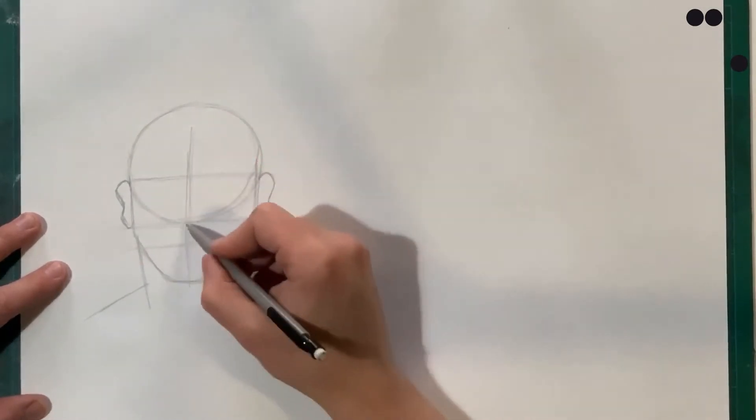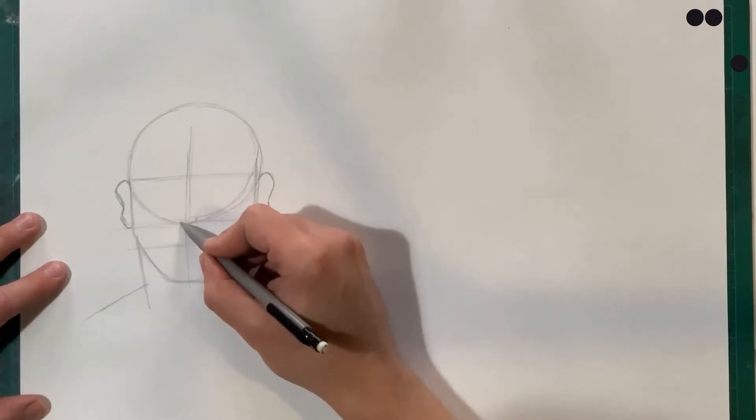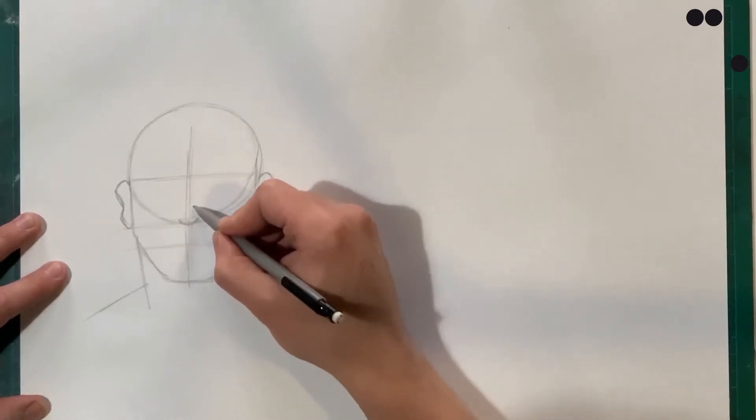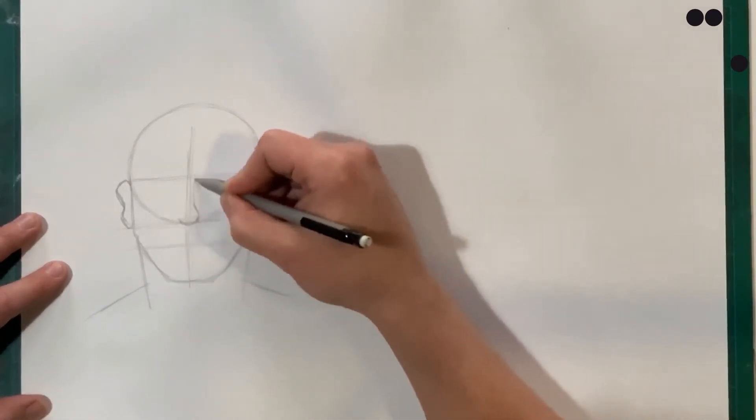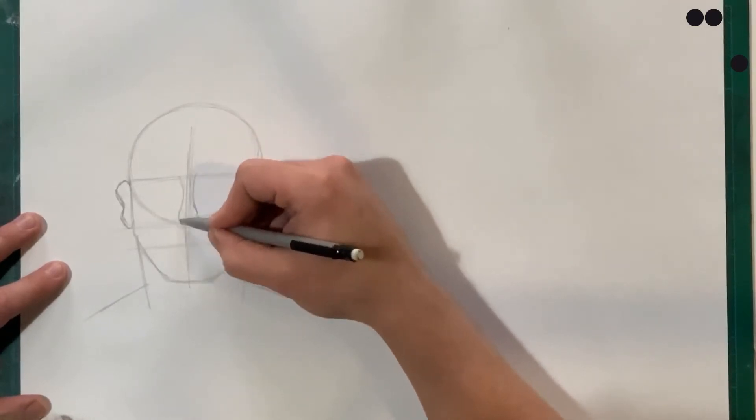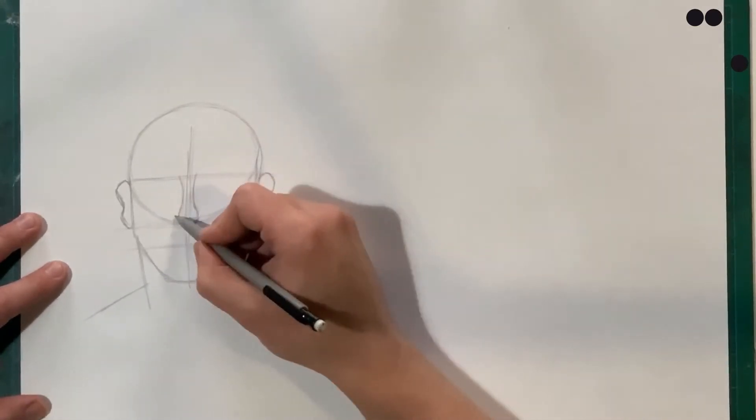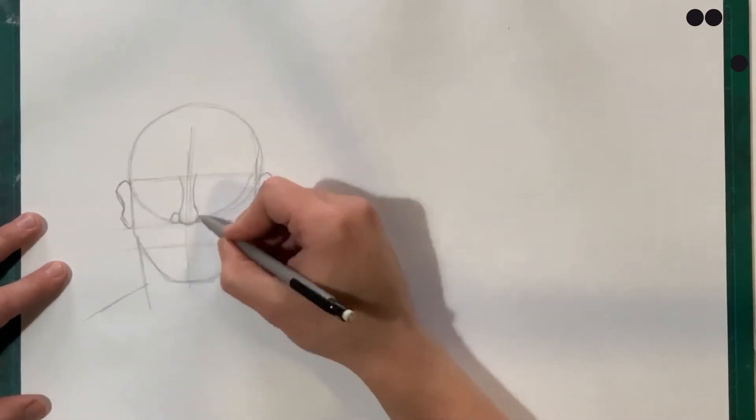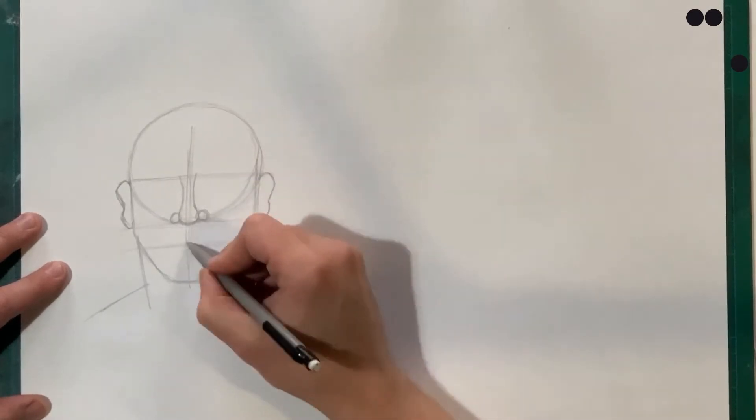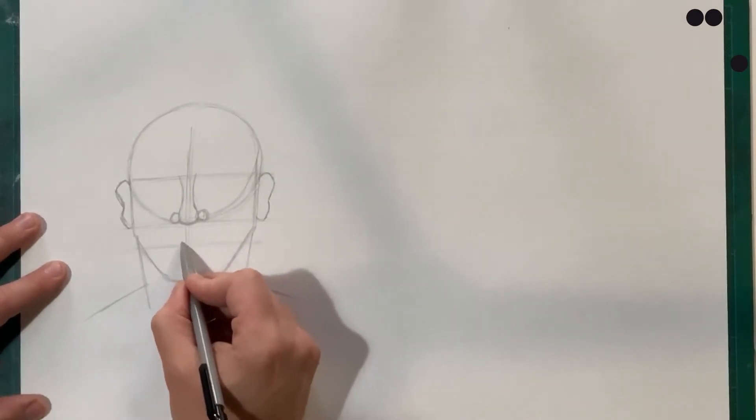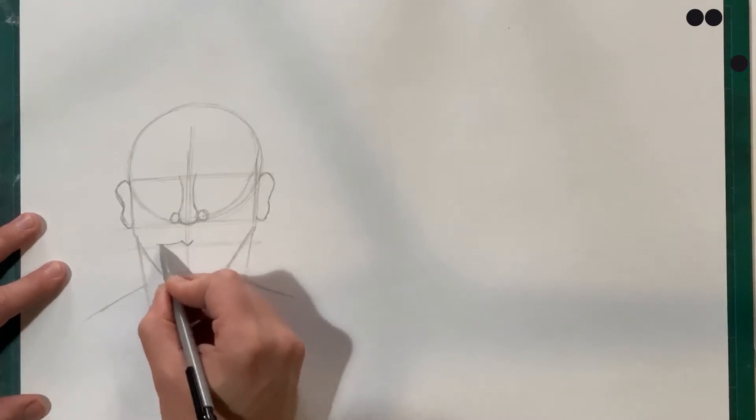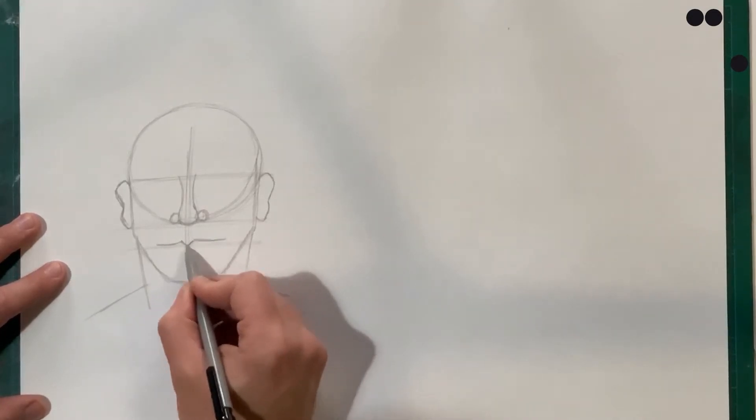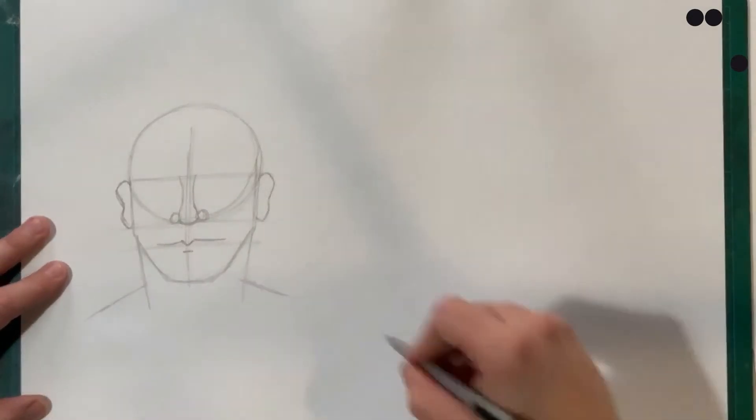Now as we continue on we can add in the ears which sit between the eye and the nose line that we've drawn in, and here I'm just quickly giving myself a guide to go from. There's some quick simple shapes for the nose which goes up to the eye line, a line across there for the mouth, and I'm shaping in the eyebrows there.